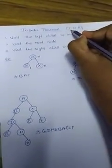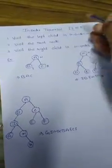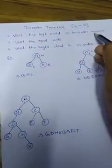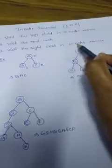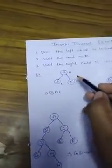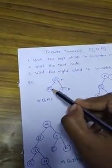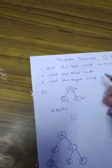Now we go through in-order traversal. In-order traversal means L, N, R — first visit the left child in in-order manner, second visit the root node, third visit the right child in in-order manner. Example with three nodes A, B, C: A is the root node, B is the left child, C is the right child. First, visit left child B; next, visit root node A; then right subtree C. So the in-order traversal is B, A, C.